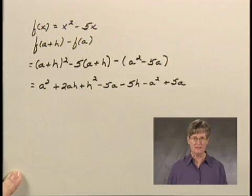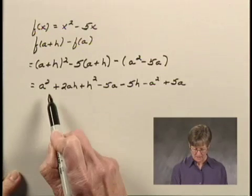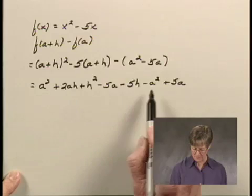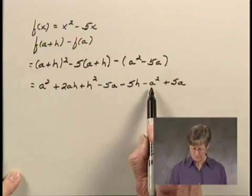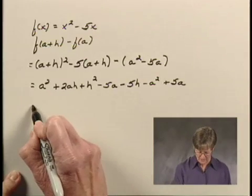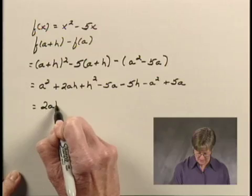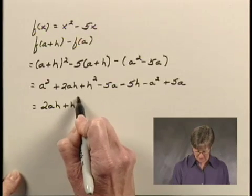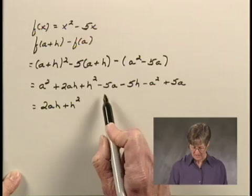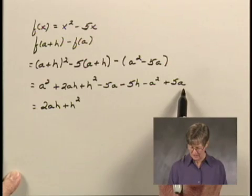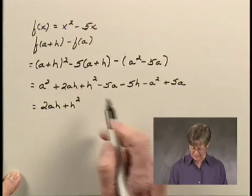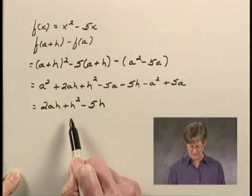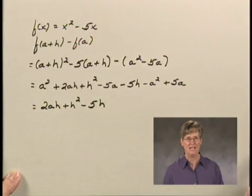Let's see if we can collect any like terms. Here I have a squared, and I have this a squared term. A squared minus a squared is just 0. I've got a 2ah, and there is no other ah term. This is the only h squared term, so I have plus h squared. I have negative 5a plus 5a, which is 0. And then I have minus 5 times h for the third term. So this is f of a plus h minus f of a.